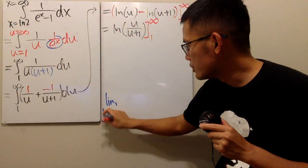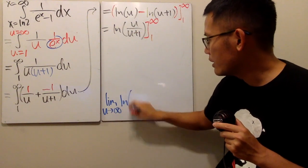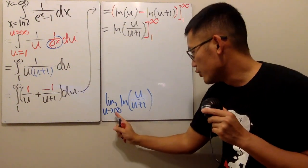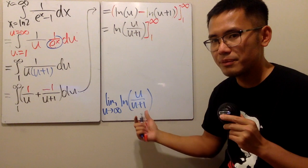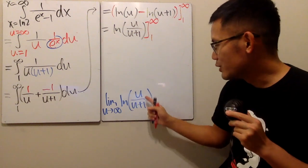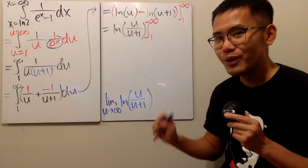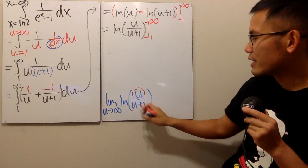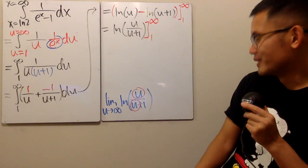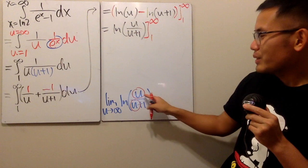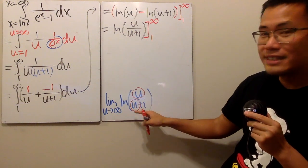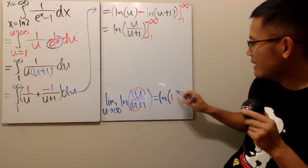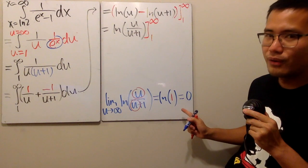So, let me write down the limit as u goes to infinity, and then we have the ln of u over u plus one. Now, if we put infinity into here and here, we get infinity over infinity. You can do L'Hôpital's rule. But, this right here is just a rational situation, right? So, you can do the following. On the top, just care about the highest degree of the u, which is just u. On the bottom, you just care about the highest degree of the u. Just u. So, you can see, when u goes to infinity, the inside is just going to be one. So, you end up with ln of one. And, of course, that will be zero.